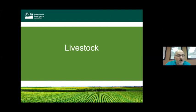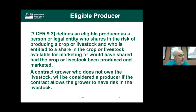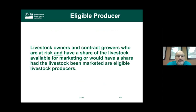Moving on to the livestock portion of CFAP: there are two significant components — what makes an eligible livestock producer, and which livestock are eligible. An eligible livestock producer includes livestock owners and contract growers who are at risk and have a share of livestock available for marketing, or would have had a share had the livestock been marketed.